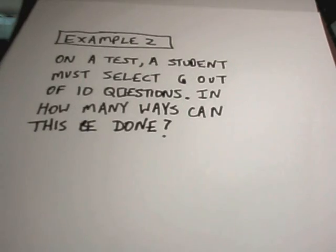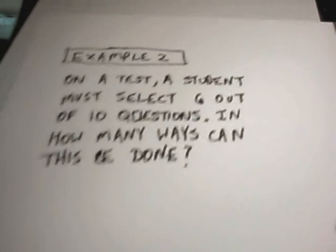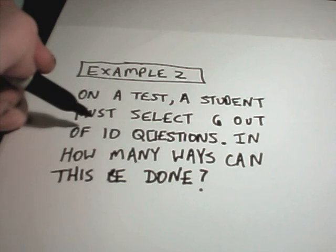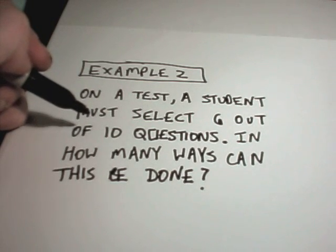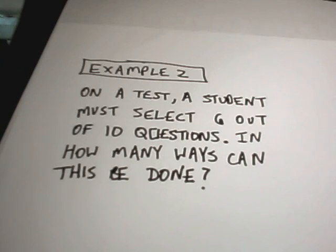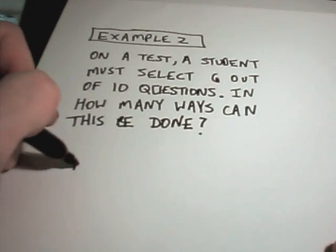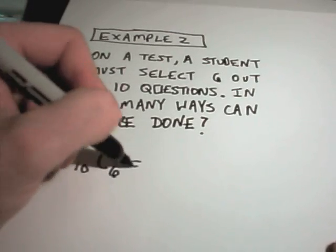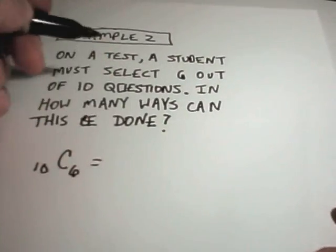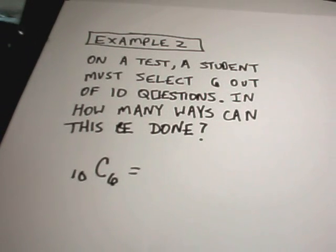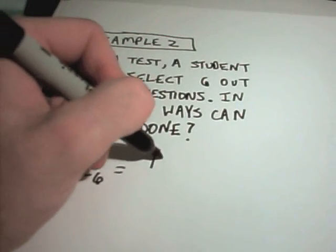Alright, I've got two more here. It says on this one, again kind of a basic one, on a test a student must select six out of ten questions, and how many ways can this be done? So suppose you've got a multiple choice. You've only got to choose six of the ten questions. Well again, it's ten. You're choosing six of them. And the formula, again, the order you select the answers doesn't really matter. Maybe you do the first six, but maybe you do them in the order six, five, four, three, two, one. You've still answered the same six questions.